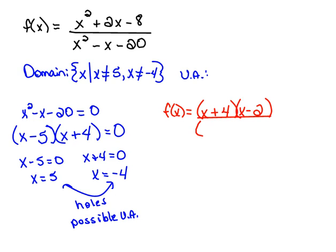For the denominator, we actually already have that factored. We did it when we looked at the domain. We said that was x minus 5, x plus 4.